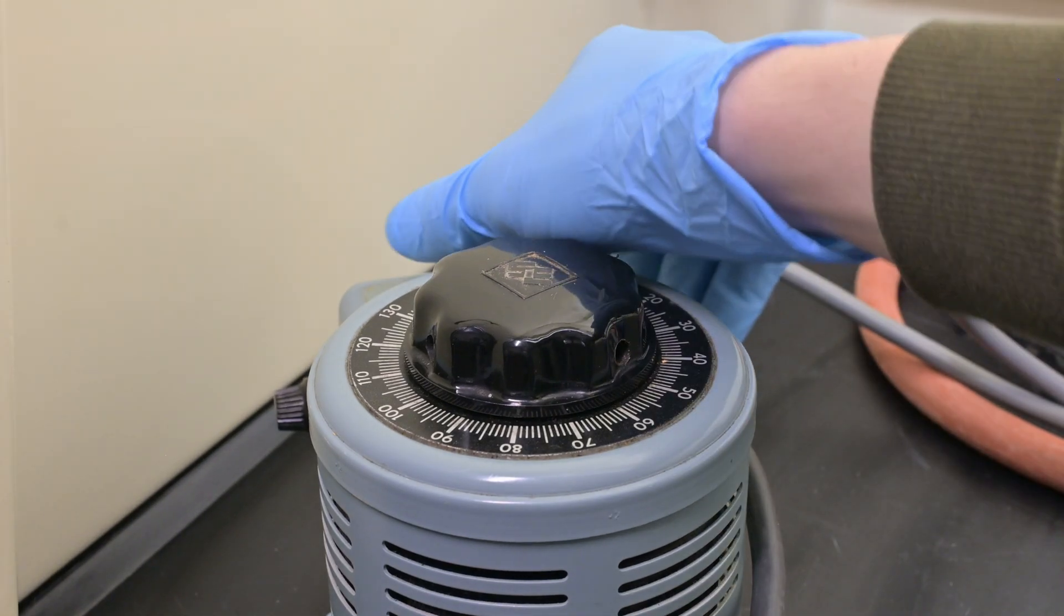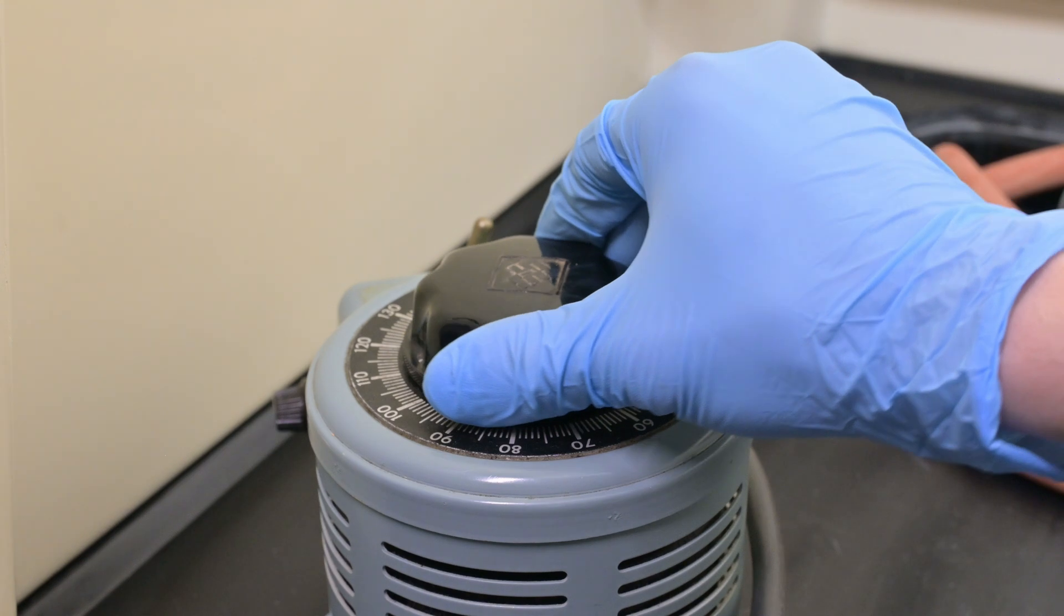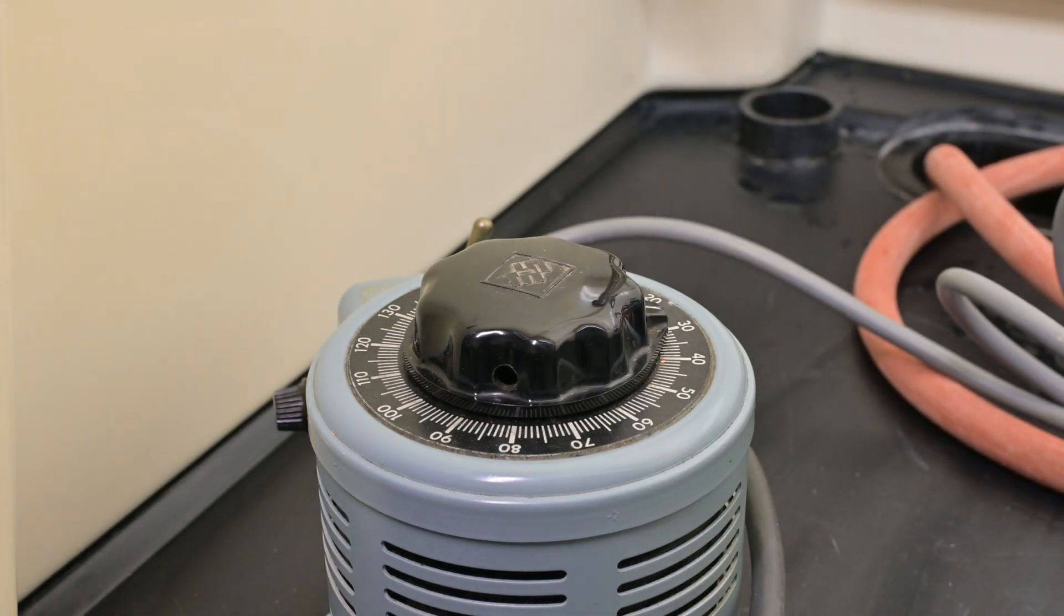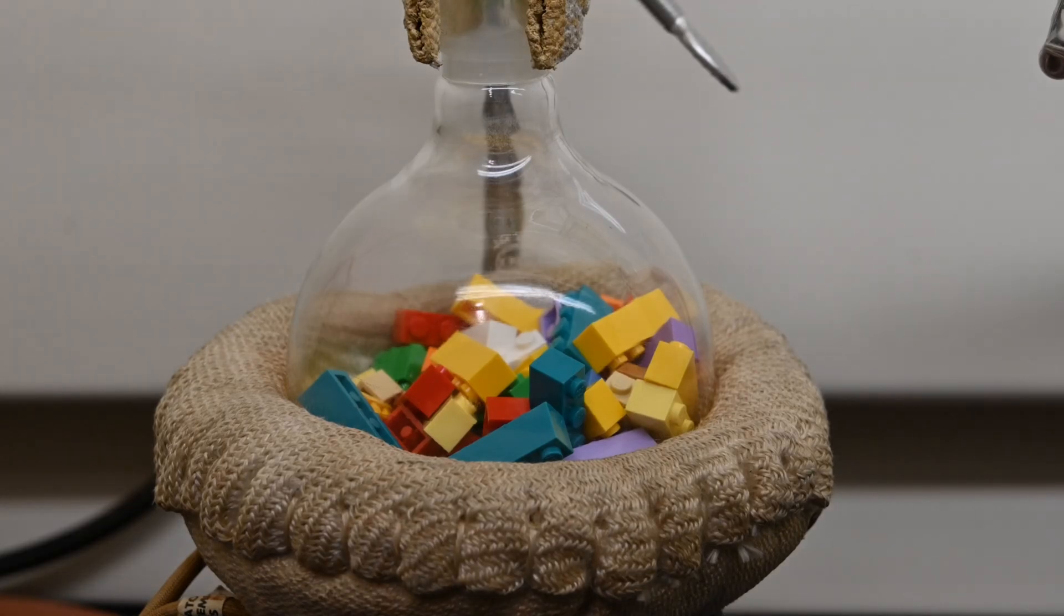After purging the system with nitrogen, we began to heat the flask slowly, starting at a low temperature and gradually ramping it up. Around 100 degrees celsius, we started to see water evaporating and collecting at the top of the flask.